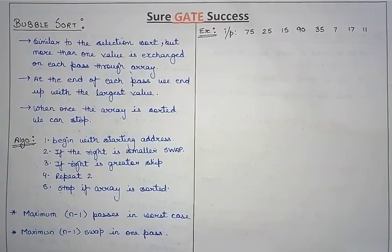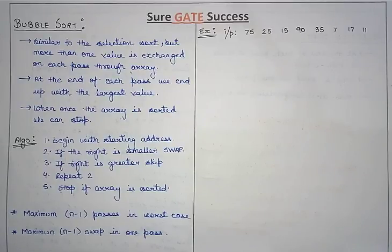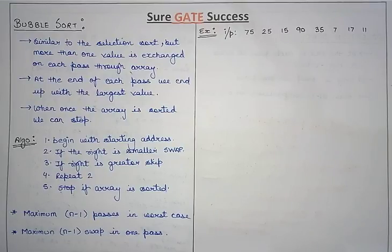Hello guys, welcome to sure great success. This video is on bubble sort, which is similar to selection sort, but in a single pass more than one value can be exchanged. At the end of each pass we end up with the largest value, while in selection sort we end up with the smallest value. Once the array is sorted we can stop — we don't need all n-1 passes; we can stop in between if there are no swaps.